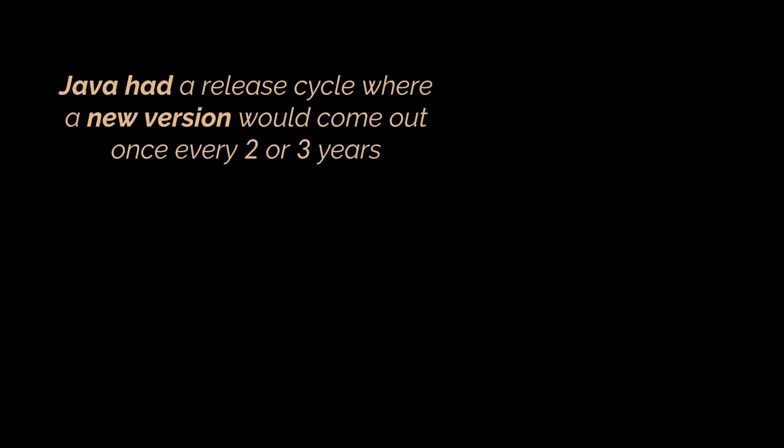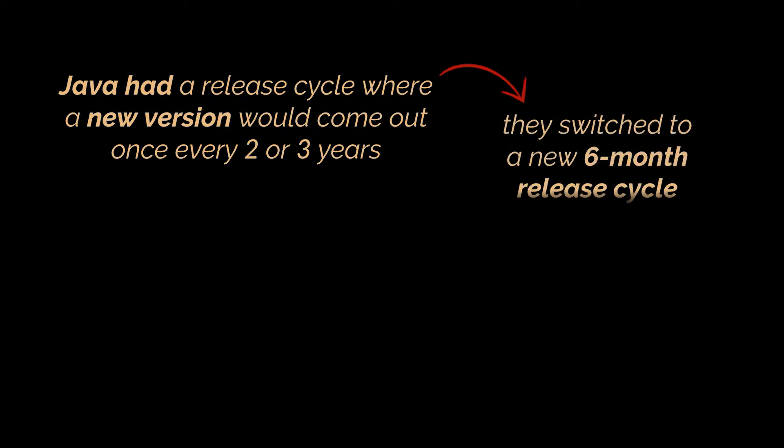Previously, Java had a release cycle where a new version would come out every two or three years. However, this did not work at all, so they switched to a new six-month release cycle. The quantity of developments introduced is still the same, but these developments are spread across multiple releases.